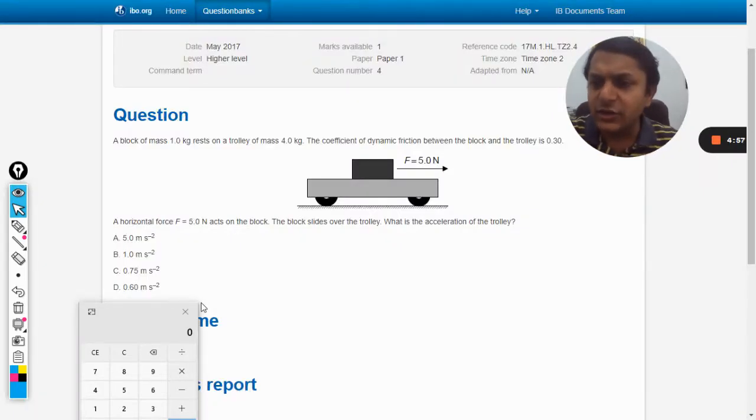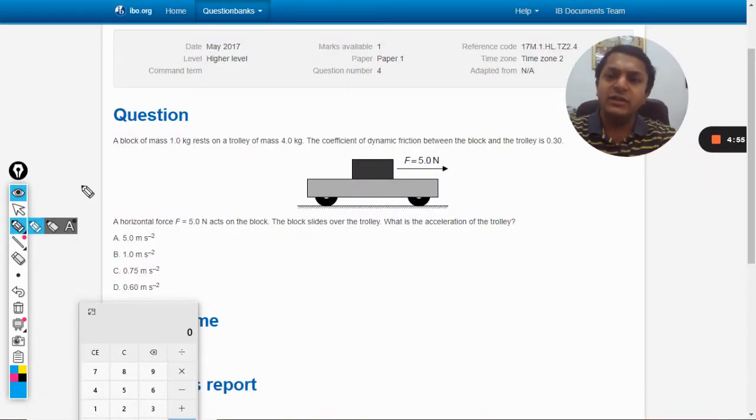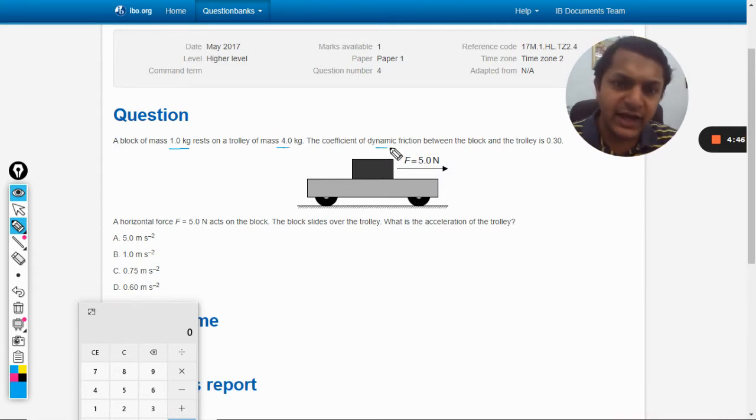Okay dear students, this is a question that belongs to higher level. A block of mass 1 kg rests on a trolley of mass 4 kg. The coefficient of dynamic friction between the block and the trolley is given to be 0.3.